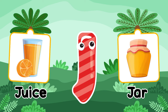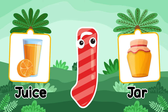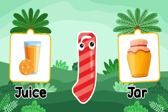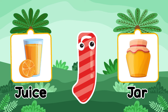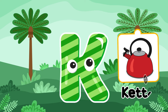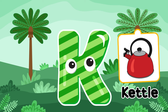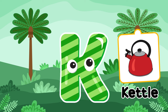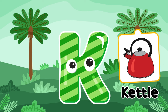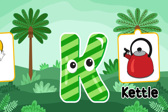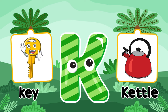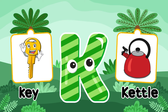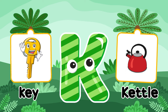J is for juice. K is for kettle. K is for key. K is for kettle.